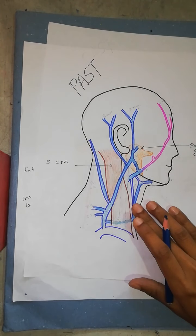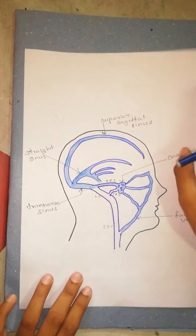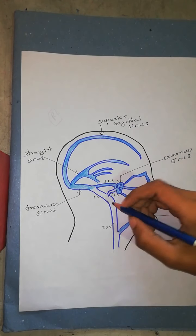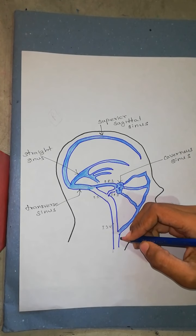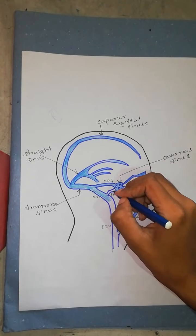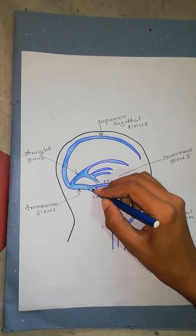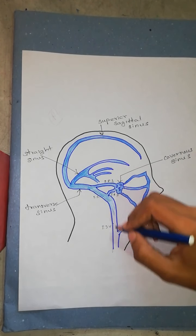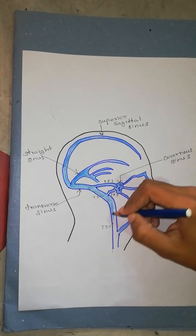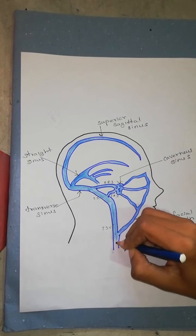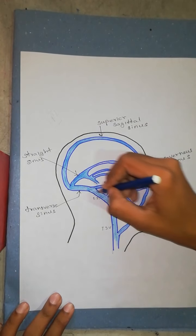Let's turn our discussion to the internal jugular vein. This is a diagram of the venous sinuses of the dura. The internal jugular vein begins at the jugular foramen by the union of the sigmoid sinus and the inferior petrosal sinus. It descends from there and is usually the largest vein of the neck. The right one is usually larger than the left one because it usually drains the superior sagittal sinus.